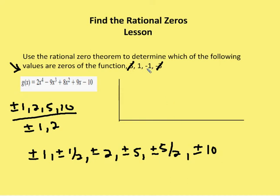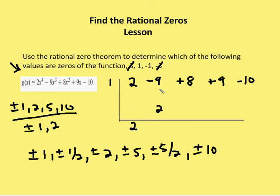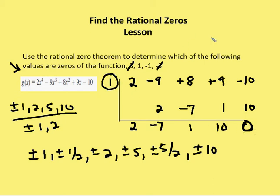Now we're going to check one and negative one to see if they are actual zeros. I write in the coefficients for the first term: two, negative nine, positive eight, positive nine, and negative ten. Let's try one as a zero first. I bring the two down. Two plus zero is two. One times two is two. Negative nine plus two is negative seven. One times negative seven is negative seven. Nine plus one is ten. One times ten is ten. And so I have a zero as my remainder, which means one is a root or zero of the function, and a factor is x minus one.